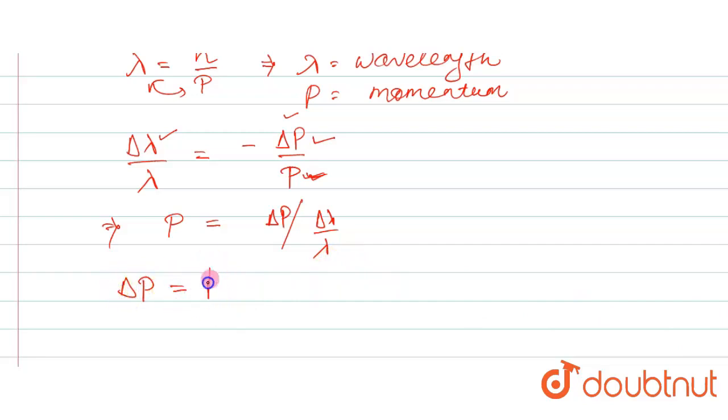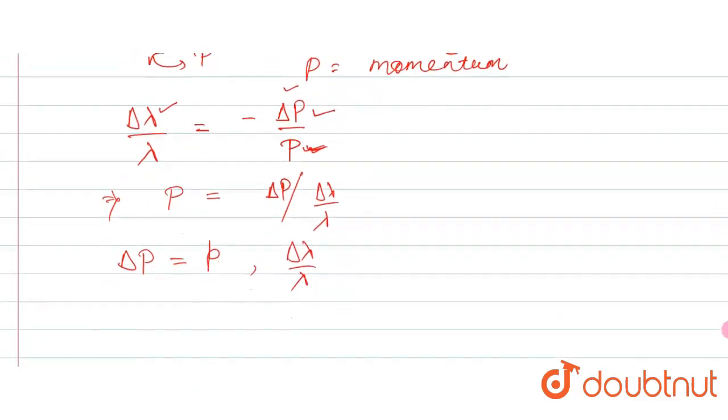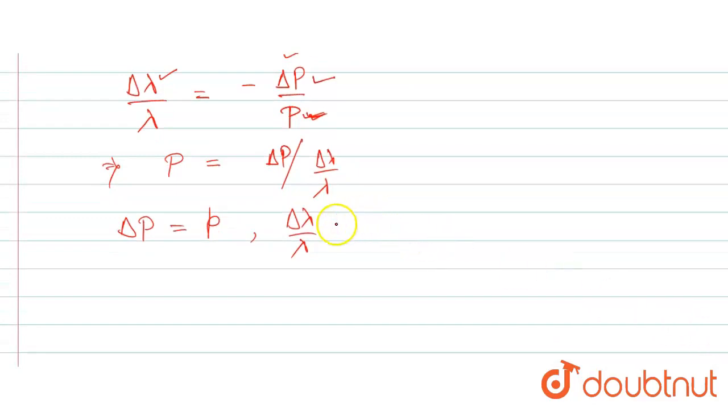Delta P is your change in momentum, that is given as small p. And your delta lambda by lambda, you can see from the question that is given, that your wavelength associated is changed by 0.5%. Which means delta lambda by lambda should be equal to 0.5 divided by 100, so this will be 5 divided by 1000, and then this will be 1 divided by 200.